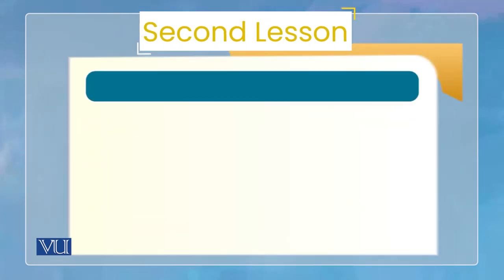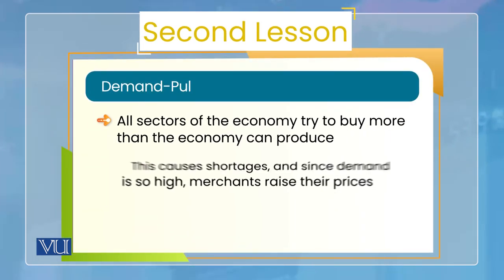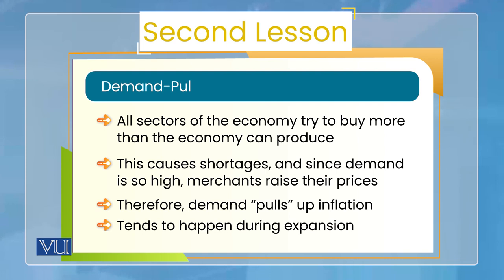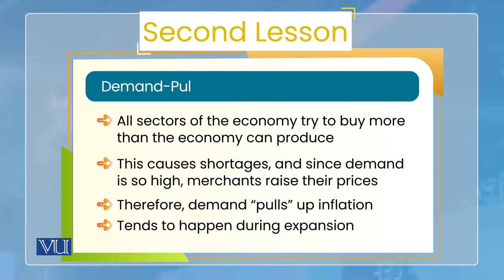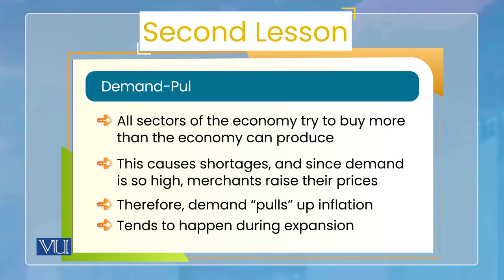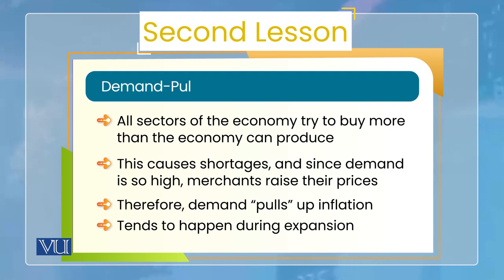Demand-pull inflation, to refresh: all sectors of the economy try to buy more than the economy can produce. Basically, جتنا economy produce نہیں کر سکتی لوگ اتنا consume کرنے کو تیار ہیں — یا government کی بھی consumption شامل کر لیں. Total economy میں اتنی consumption کی demand ہے جتنی economy produce نہیں کر سکتی. اس کا نتیجہ یہ ہوتا ہے کہ firms پھر اپنی prices بڑھا دیتی ہیں اور ultimately inflation آ جاتا ہے.